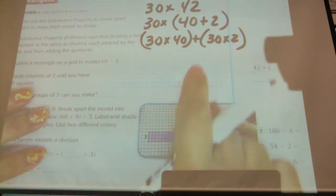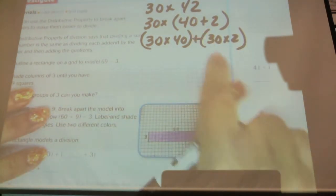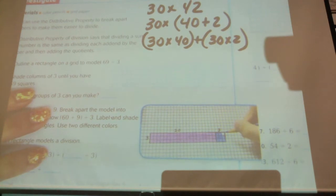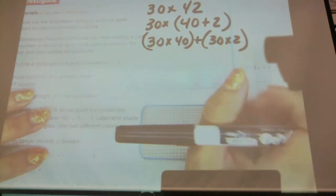30 times 40 and then plus, because this is a plus here, 30 times 2. The distributive property allows me to do that.